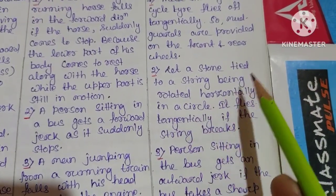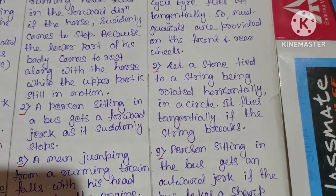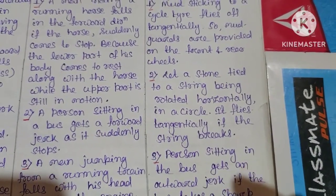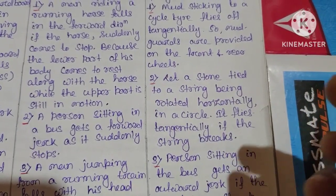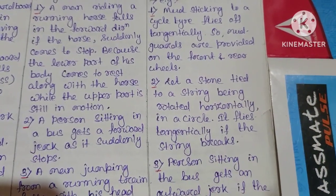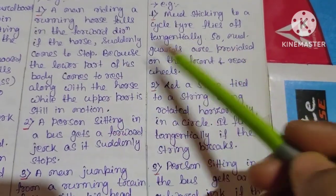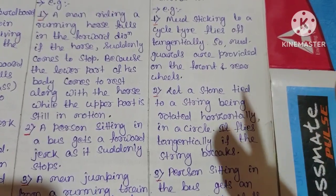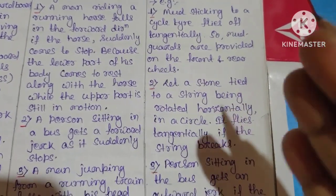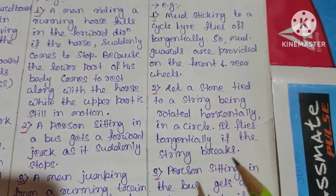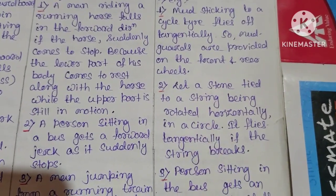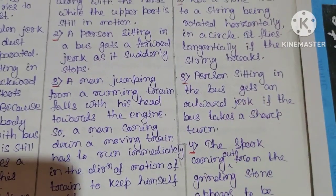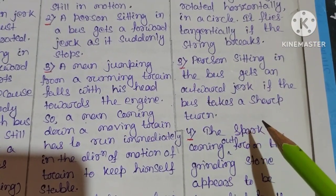Again, a stone tied to a string being rotated horizontally in a circle flies tangentially if the string breaks. The stone moves tangentially due to inertia of direction. A person sitting in the bus gets an outward jerk if the bus takes a sharp turn.